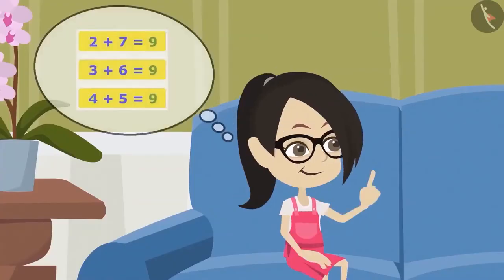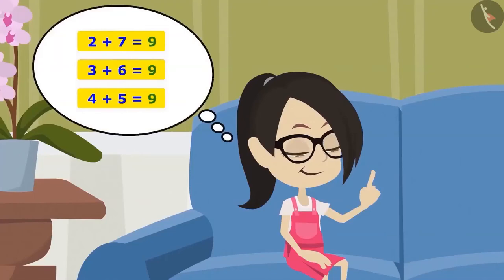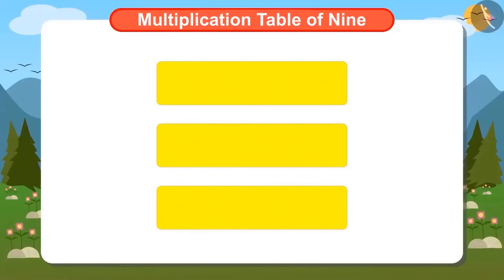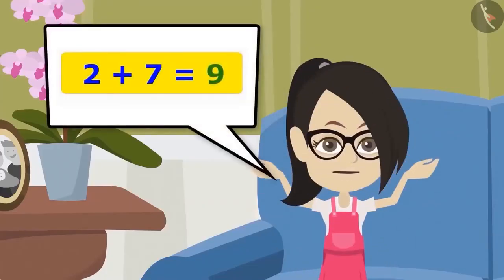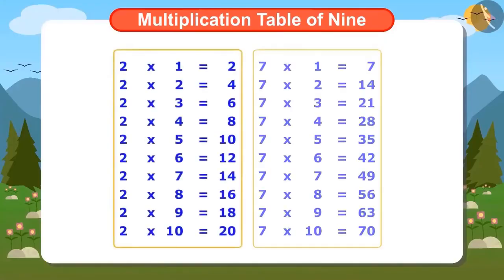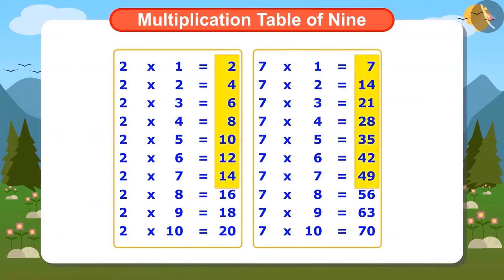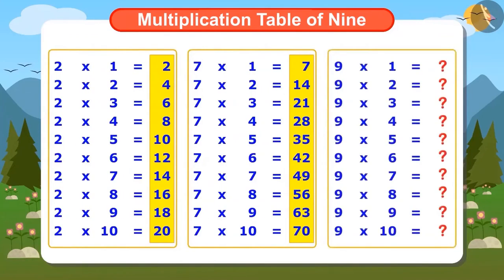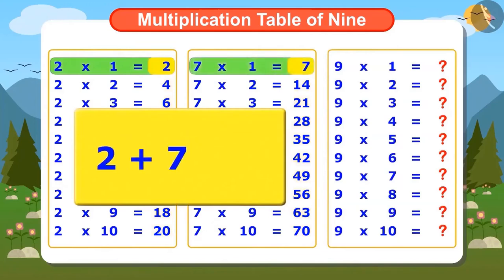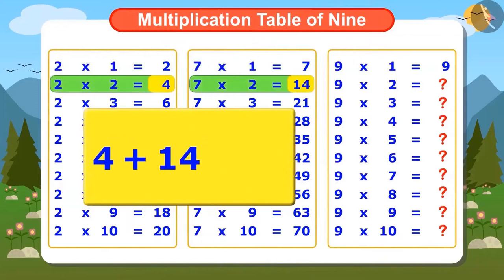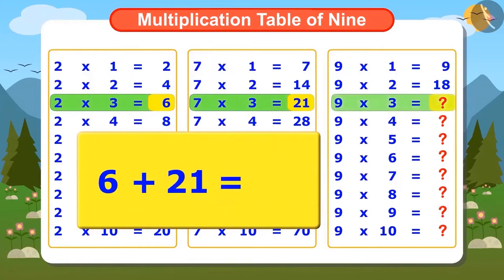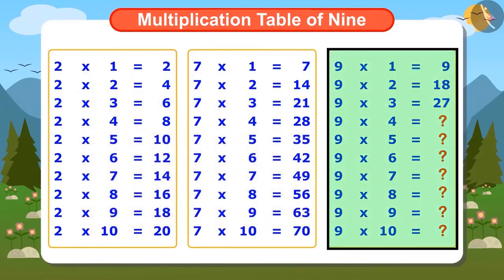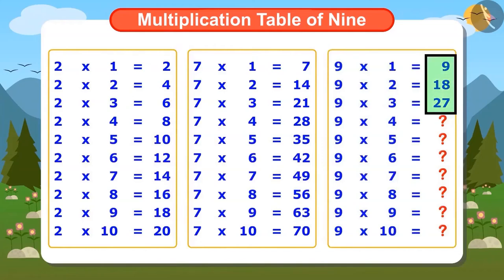Vandana can choose any one of these groups. She chooses the tables of 2 and 7. Let me now find the table of 9 from the tables of 2 and 7. By adding 2 and 7, the answer will be 9. By adding 4 and 14, we get 18. After adding 6 and 21, we get 27. Vandana has found out the initial three answers of the table of 9.